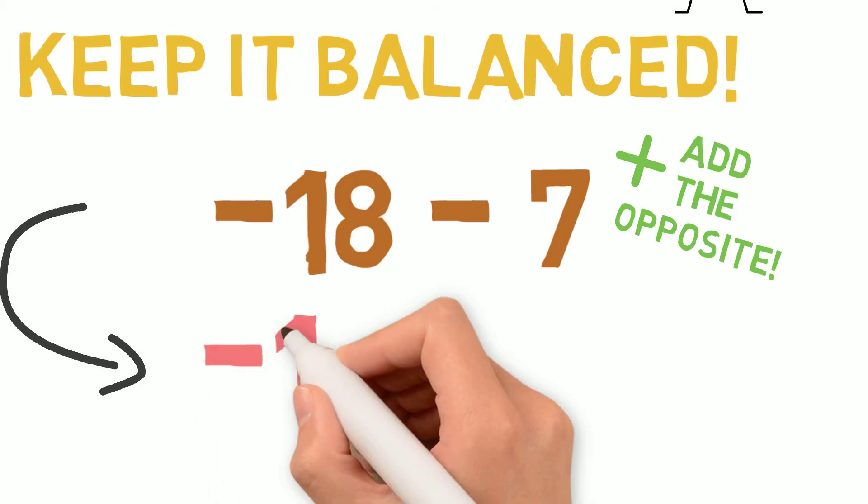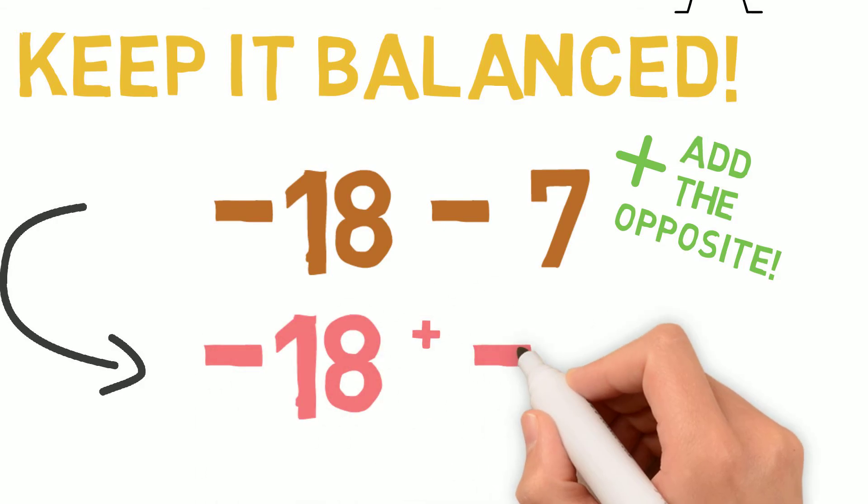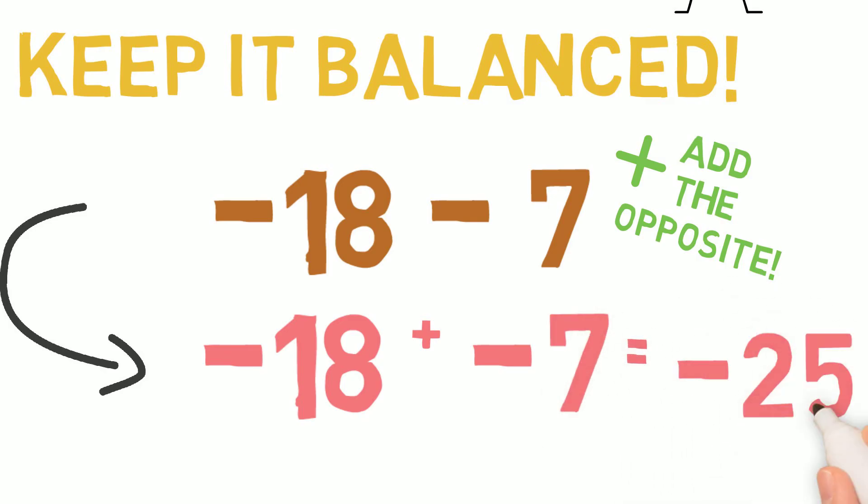Now, negative 18 minus 7 is really negative 18 plus negative 7, which equals negative 25.